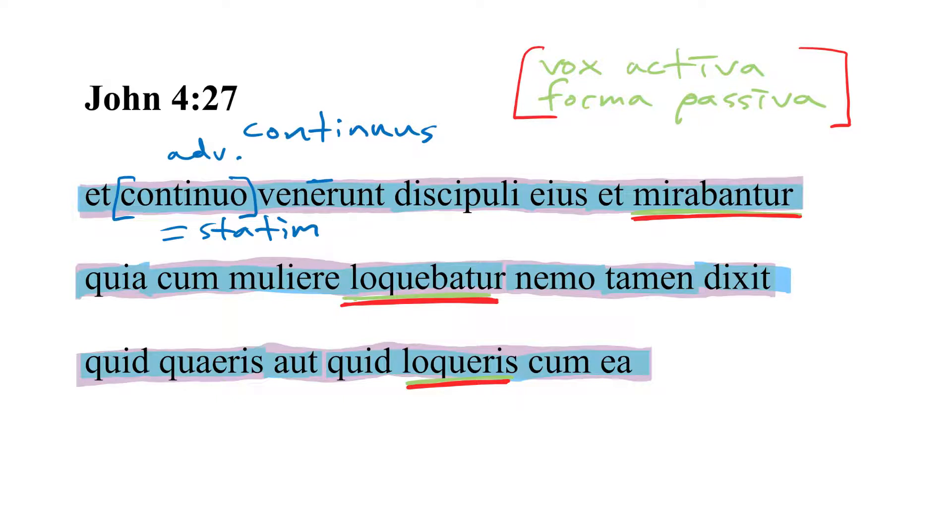Venerunt, third person plural perfect active indicative from venio venire, to come. And his disciples got there. They came, disciples of him, that is of Jesus.